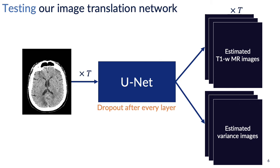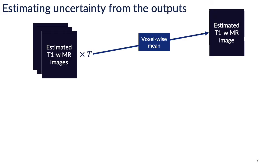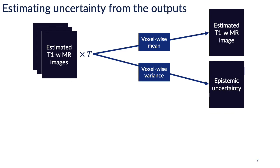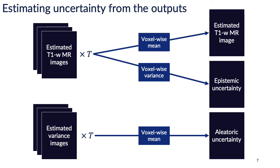To get the epistemic and aleatoric uncertainty estimates, we also need to modify our testing procedure. We use dropout during testing to sample the weights of the neural network and pass in the CT image T times, getting T estimated T1-weighted images and T estimated variance images. We use the sample mean of the T estimated T1-weighted images as the final synthesized image. The variance of those T estimated images gives epistemic uncertainty — it's low when the model predicts nearly identical outputs and high when predictions are inconsistent. Finally, the mean of the estimated variance images gives aleatoric uncertainty, capturing an intrinsic quantity of the data.